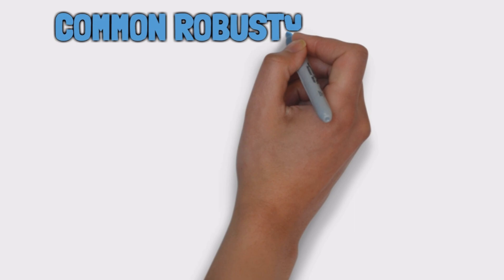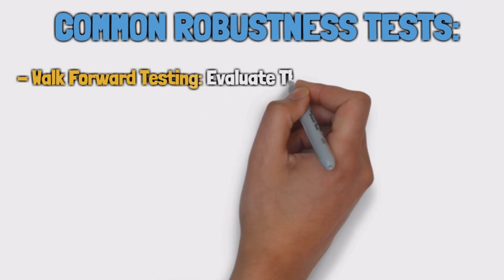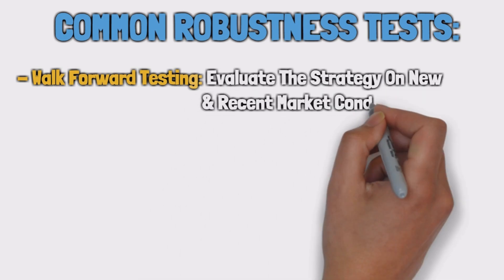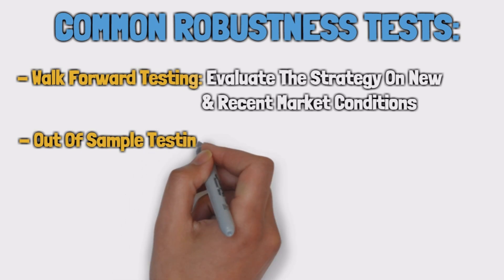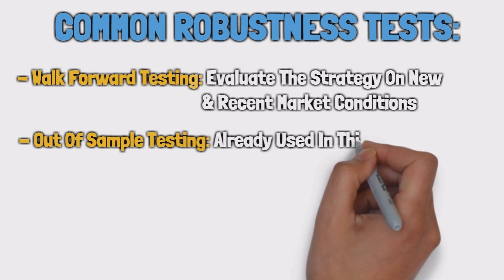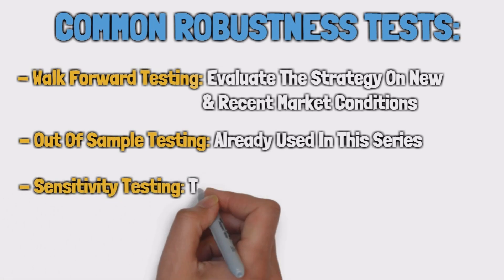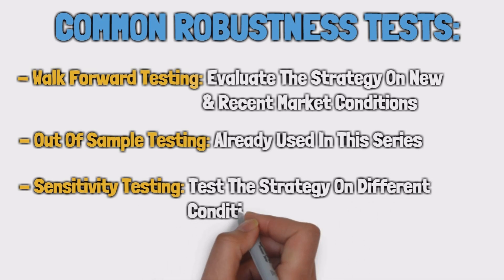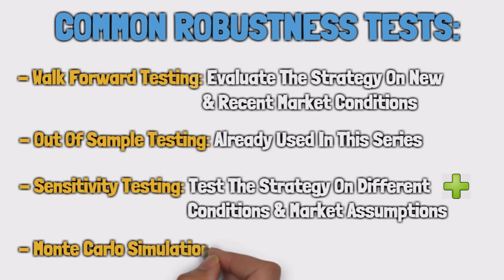Some common robustness tests in trading include walk-forward testing, which involves applying the strategy on a forward period to evaluate its ability to perform well in new market conditions. Out-of-sample testing involves testing the strategy on data that was not used in the optimization process to establish whether the strategy can perform well on new data — I already applied this type of test, but today I will do it again in another way. Sensitivity testing involves testing the strategy under different parameter values and market assumptions, and for me it is the most important test. And finally, Monte Carlo simulations, which I have also briefly shown you in episodes 2, 3 and 4.